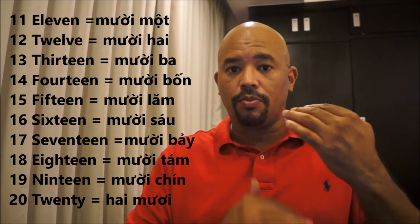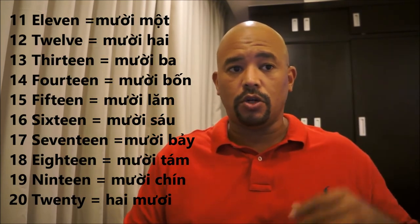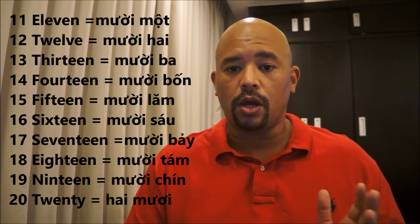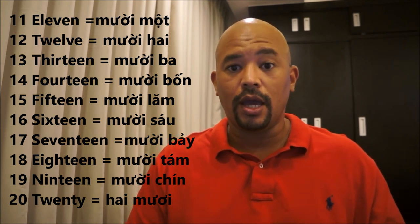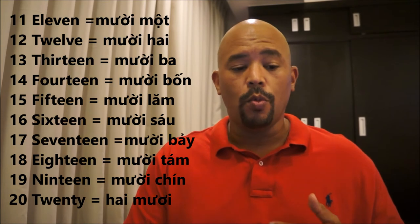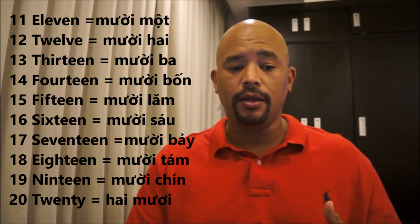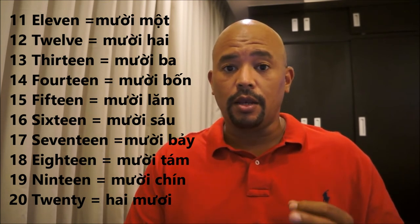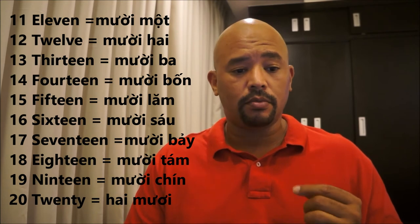It looks like the way it's built is that it just takes 10 and then puts 1 at the end. So instead of having a separate word for 11, they just go 10, 1. So it looks like 'mười một,' and that's 11. 12 is the same thing: 'mười hai.' 13 is 'mười ba.' 14 is 'mười bốn.'